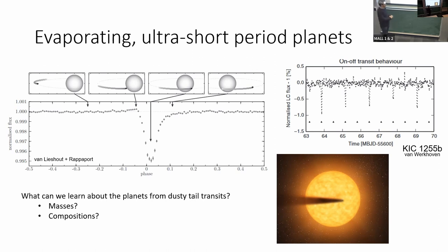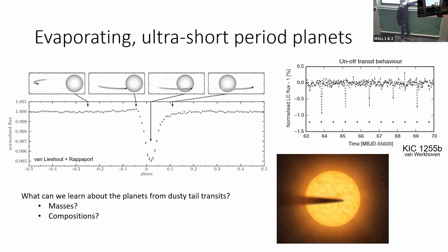The thing that we think we're looking at is a dusty tail. A dusty tail makes sense: you're going to have a sharp ingress, so the light curve drops rapidly, and then it should rise more slowly because the optical depth through this tail gets smaller as you go away from it. So that sort of naturally explains the shape of it.